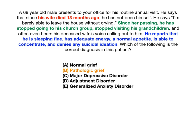The blue text shows that he's sleeping fine, has adequate energy, a normal appetite, normal concentration, and denies suicidal ideation — meaning he does not have the symptoms of major depressive disorder, specifically the SIG-ECAPS symptoms. So we can rule out C — it's not MDD. And we can rule out A — normal grief — because not only did his wife die 13 months ago, but it's starting to impair his life. When you have functional impairment, the answer is pathologic grief.